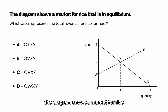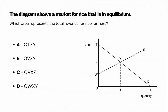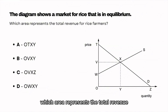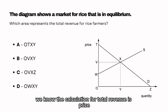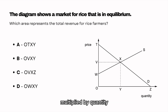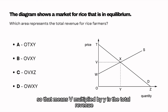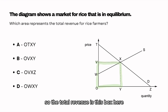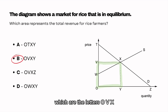The diagram shows a market for rice that is in equilibrium. Which area represents the total revenue for rice farmers? The calculation for total revenue is price multiplied by quantity. So V multiplied by Y is the total revenue — this box with letters O, V, X, Y. The answer is B.